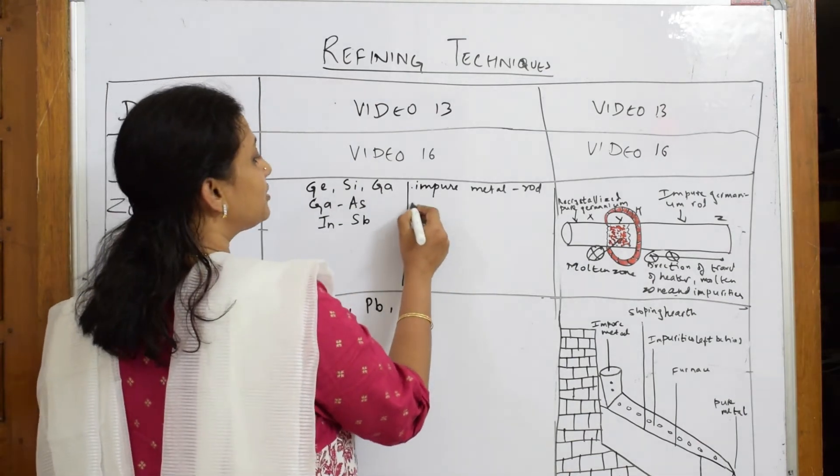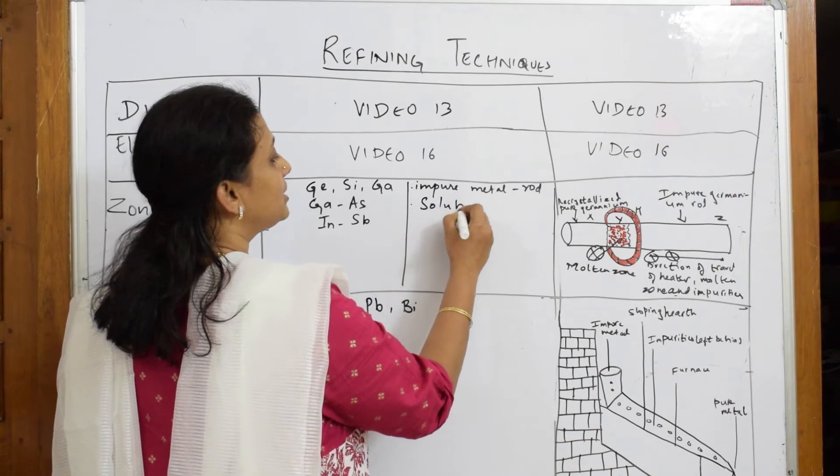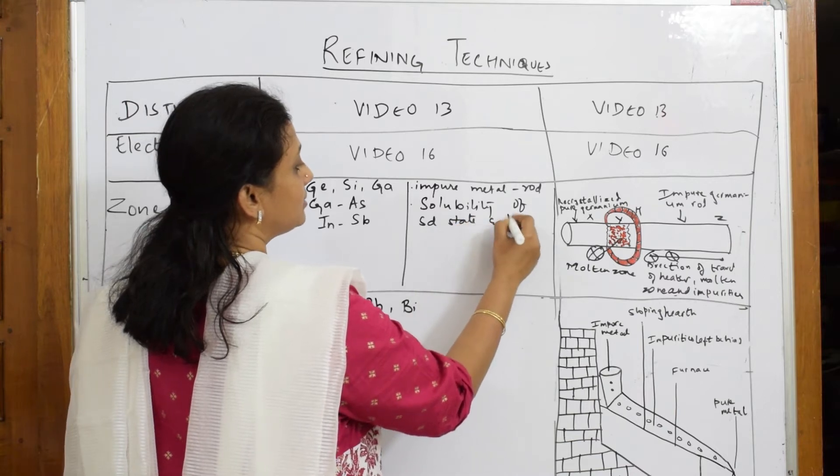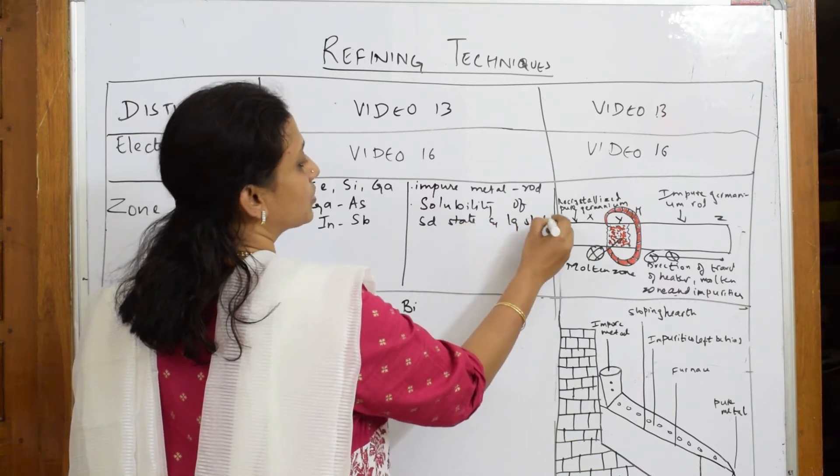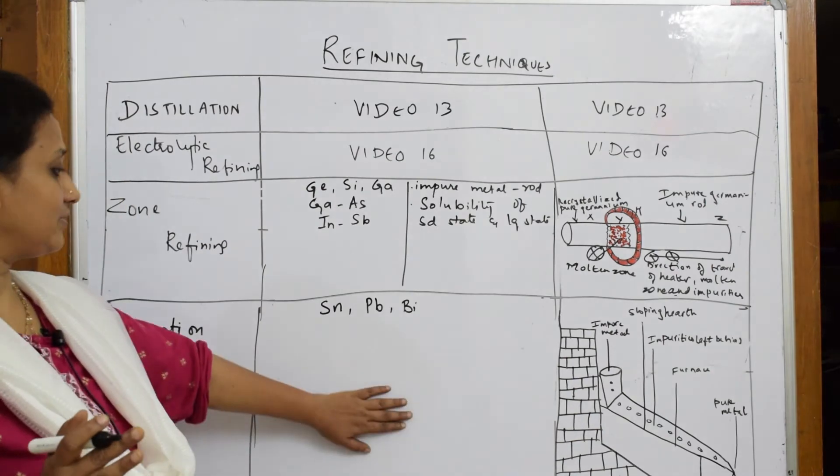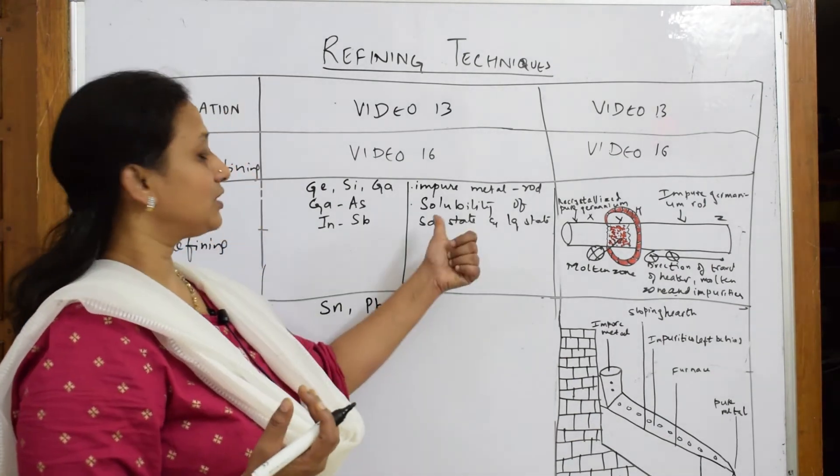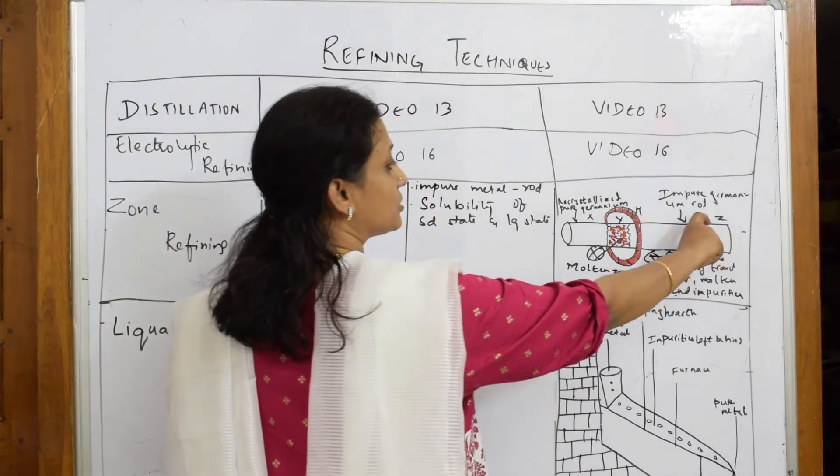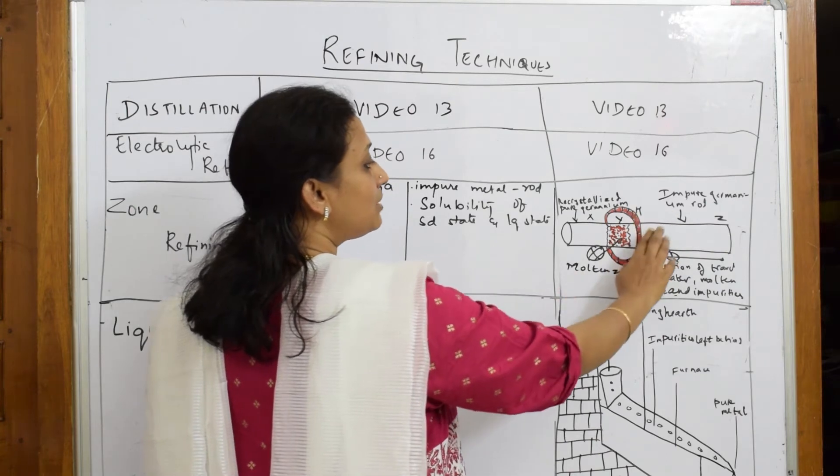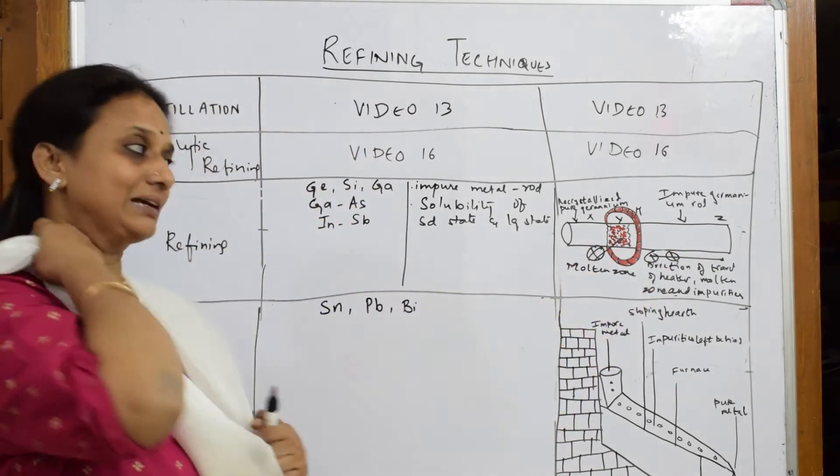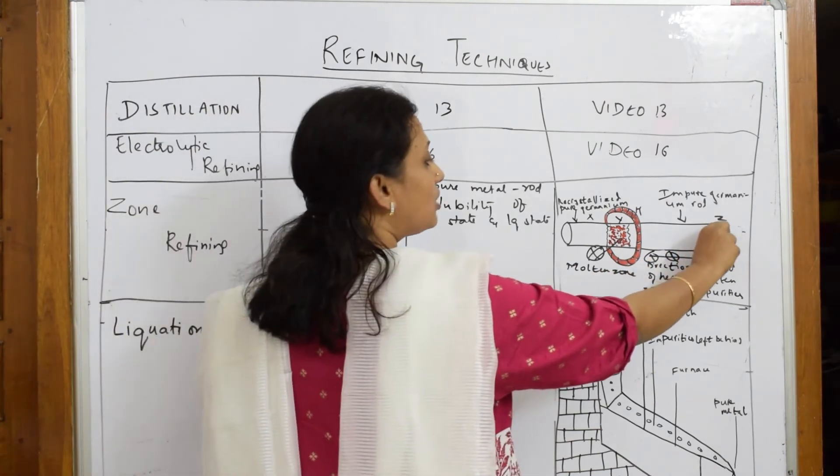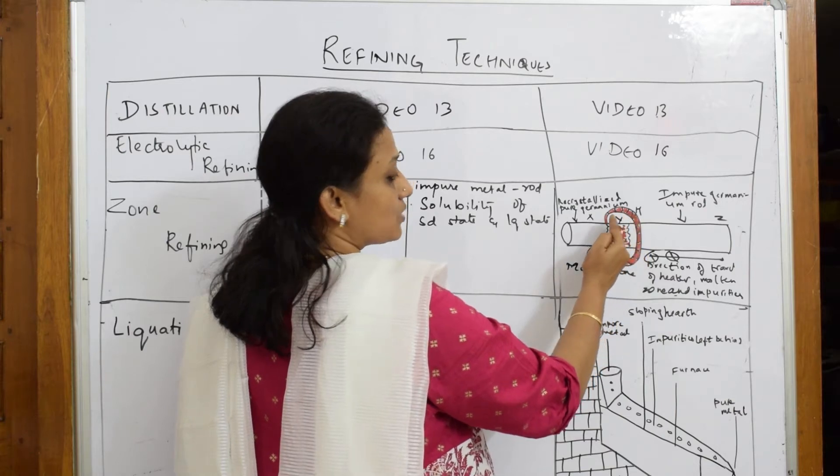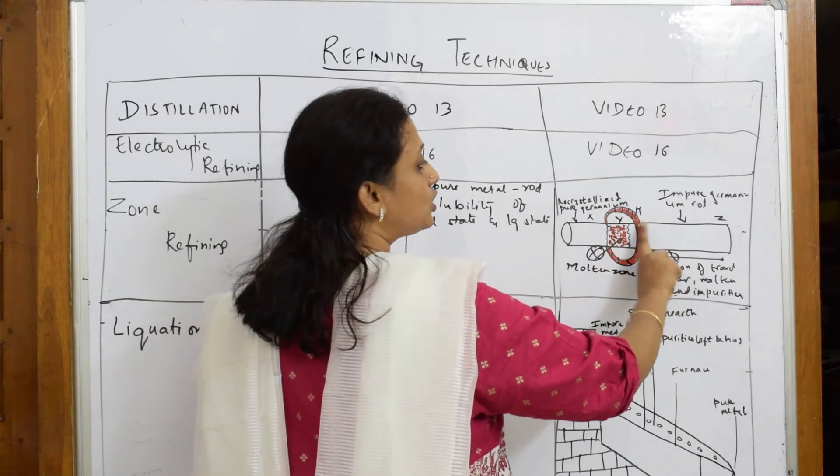The principle of solubility is followed here - solubility of solid state and the liquid state of the ore is taken into consideration. When the rod is moving in this direction, all the metal and the impurities which are present move along with this roller. Once they move along with this roller, as the roller moves down, all the impurities get collected to one side.